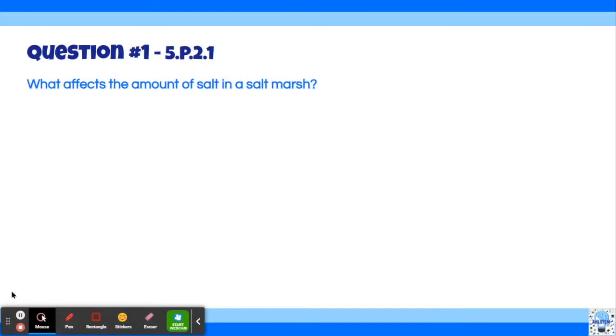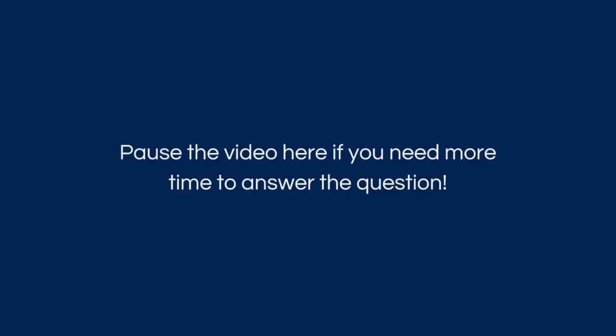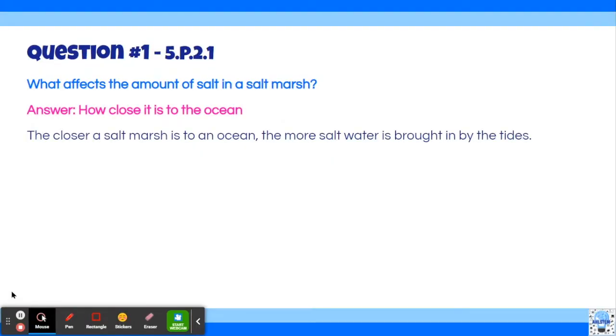Question number one, what affects the amount of salt in a salt marsh? The answer is how close it is to the ocean. The closer a salt marsh is to an ocean, the more salt water is brought in by the tides.